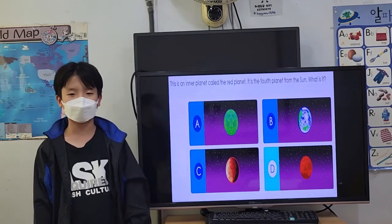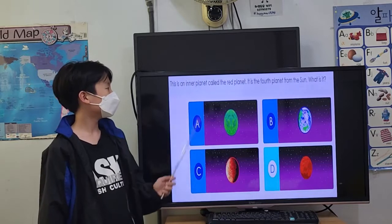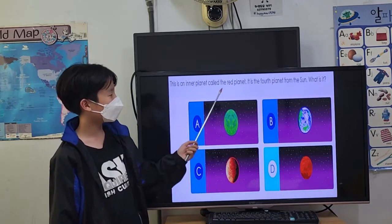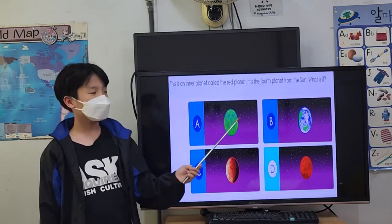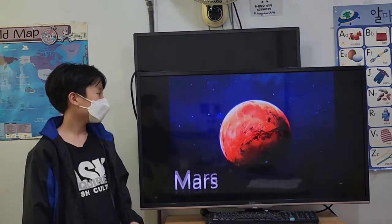Hello everyone. I represent Mars and Venus. This is an inner planet called the red planet. It is the fourth planet from the sun. What is it? Mars.